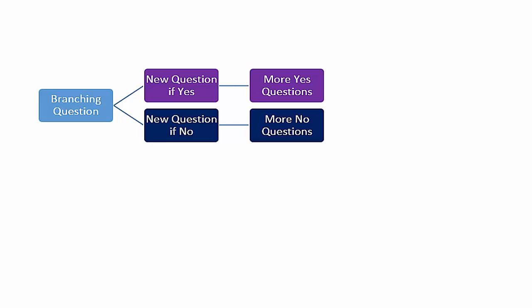On your screen right now is just one example of how branching logic would work. In this example, if a user answers yes to a question that has branching logic applied, it takes them to another question that further expounds upon that answer, and then to another question and so on. The same is true with no — if a user answers no, it takes them to a certain set of no answers.